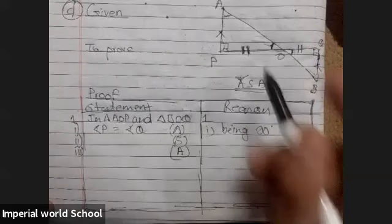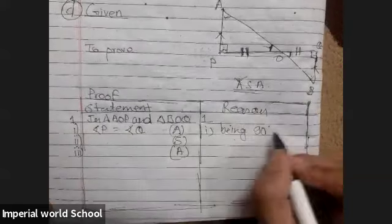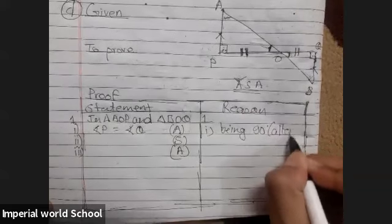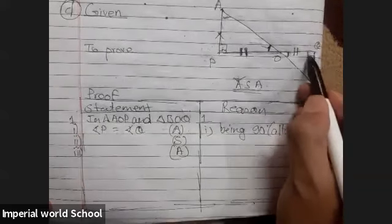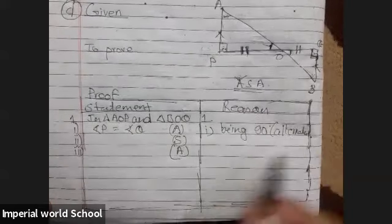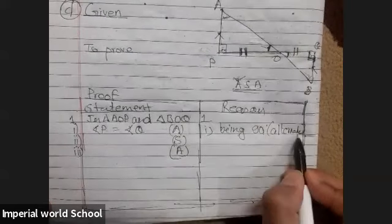Yes, yes. Yeah, actually this is alternate also. Let's write alternate in bracket. Because I guess in this book, this 90 degree has not been. So, you write being 90 degree and alternate.